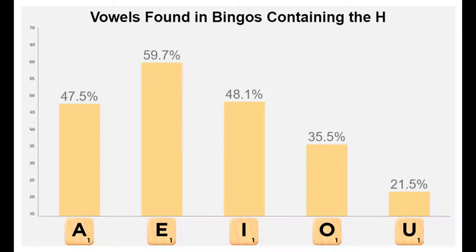In bingo length words containing an H, the frequency of vowels is roughly what you would expect to see, with E's leading the way, A's and I's a tick behind, and steep declines to the O and then the U.